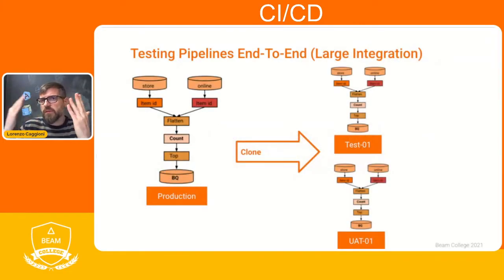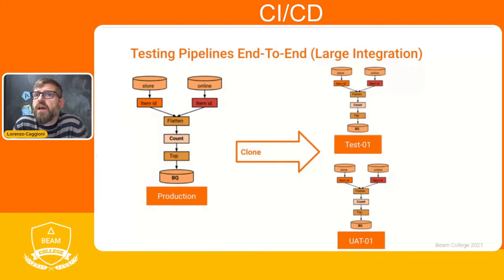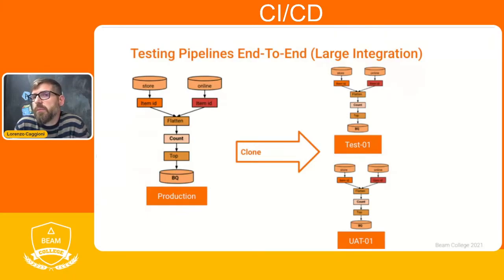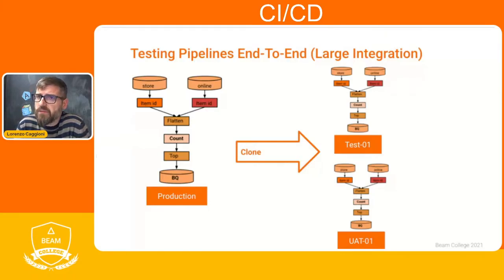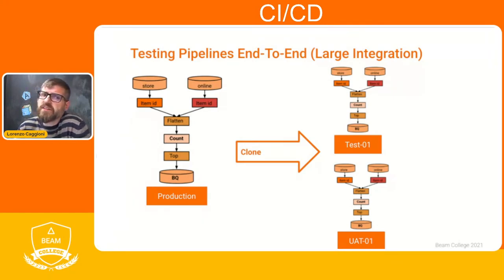Sometimes we want to test our pipeline with even larger amounts of data. For this you usually want to create a copy of your production data, run your pipeline, compare the results, and check them first in a test environment. Sometimes you also have a second environment for user acceptance testing. It's usually at this stage that you do performance testing, now that you have the production data load.